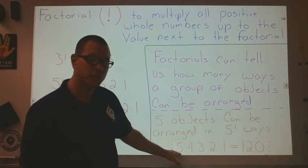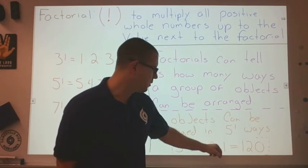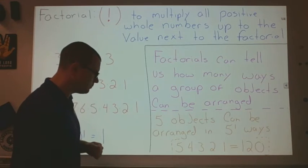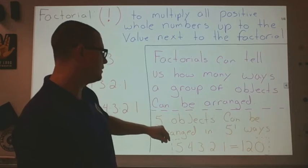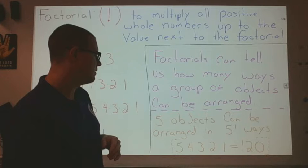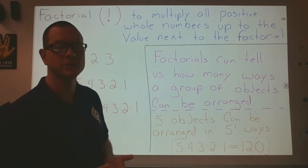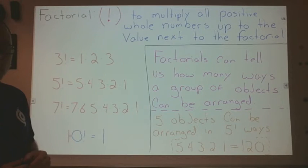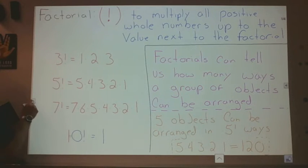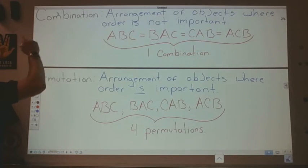That's 5 ways for the first choice, 4 ways for the second choice, 3 ways for the third choice, 2 ways for the fourth choice, and then our last choice — we only have one option left. So the factorial gives us a way of counting how many ways there are to arrange objects, which is going to be good for permutations and combinations, which want to know how many ways there are of arranging objects when order is or is not important.